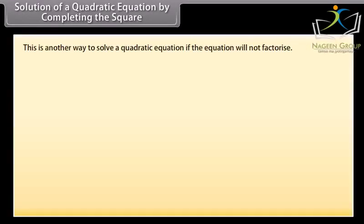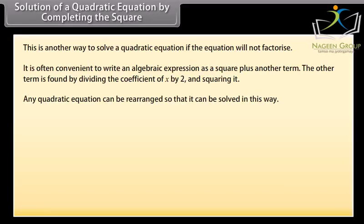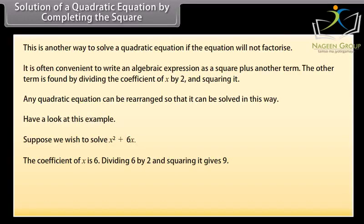Solution of a quadratic equation by completing the square. This is another way to solve a quadratic equation if it will not factorize. It is often convenient to write an algebraic expression as a square plus another term. The other term is found by dividing the coefficient of x by 2 and squaring it. For example, rewrite x² + 6x as a square plus another term. The coefficient of x is 6; dividing by 2 and squaring gives 9. So x² + 6x = (x² + 6x + 9) − 9 = (x + 3)² − 9.